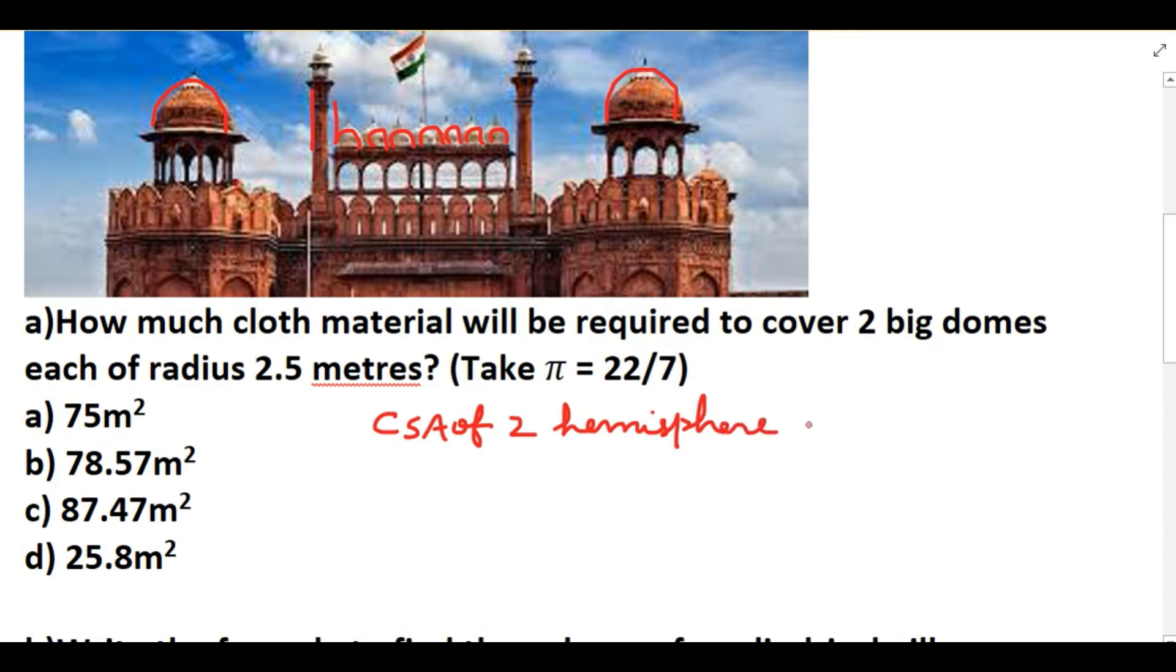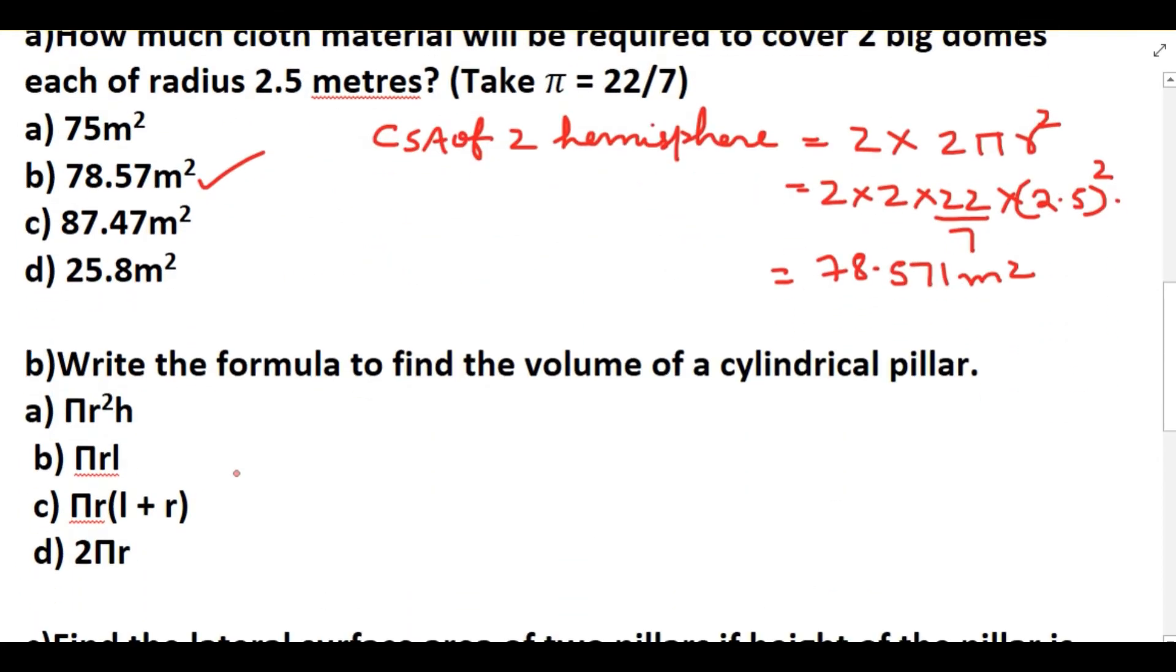We need to find out the cloth material needed. So CSA of two hemispheres is CSA of one hemisphere formula is 2πr², so CSA of two hemispheres is 2 × 2 × 22/7 × r², r² is 2.5 the whole square. So the answer is 78.57 m². So that here you can make out 78.57 m².